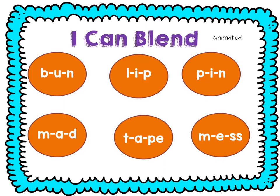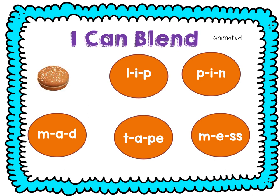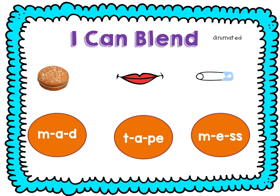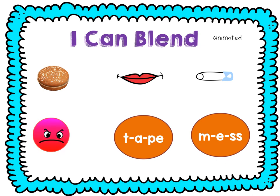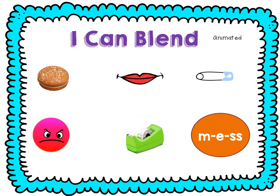See if you can blend three sounds to make a word. Ready? B — U — N — bun. L — I — P — lip. P — I — N — pin. M — A — D — mad. T — A — P — tape. M — eh — S — mess.